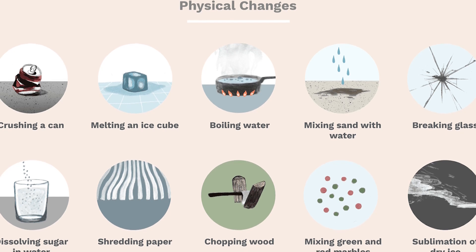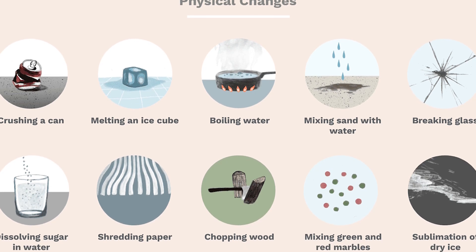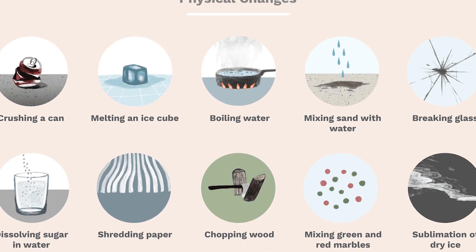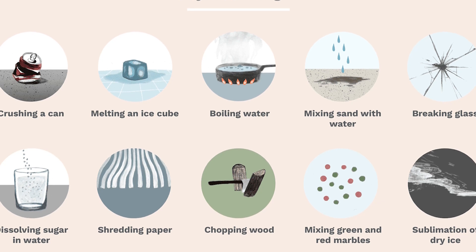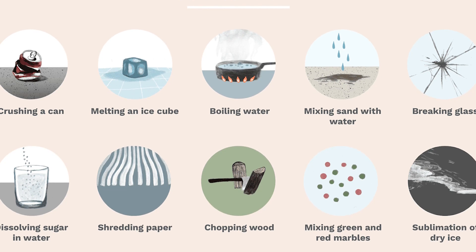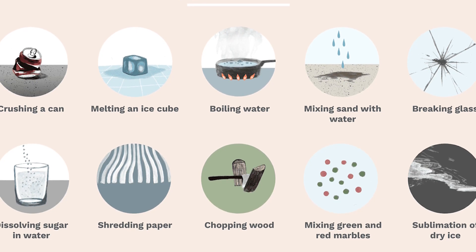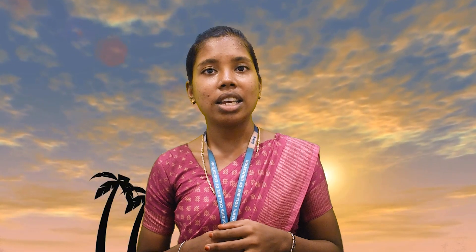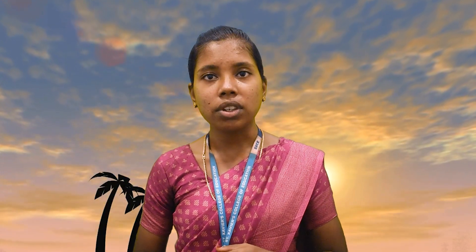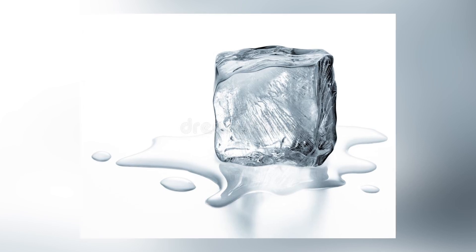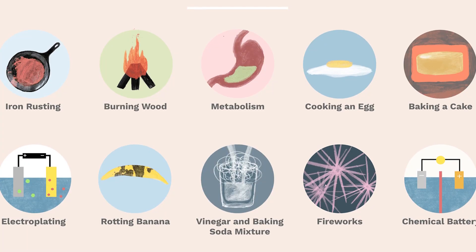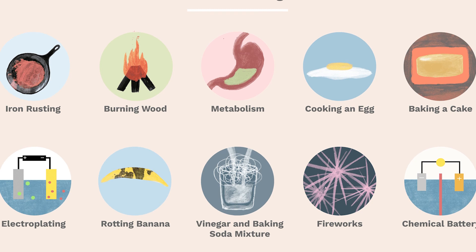In physical changes, no new substance is formed. For example, melting of ice. Next, chemical changes — chemical changes are the permanent changes in which there is a change in the chemical composition and a new substance is formed.